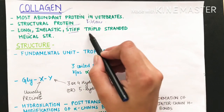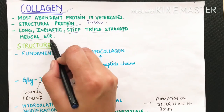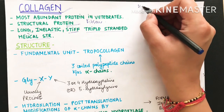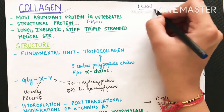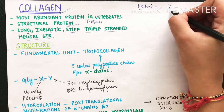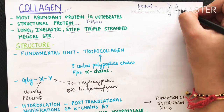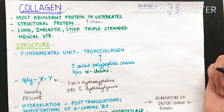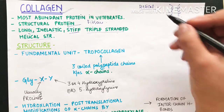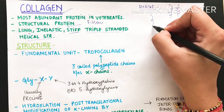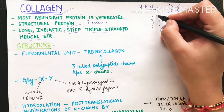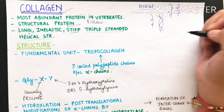Collagen is stiff and has a triple-stranded helical structure — meaning three helical chains are together forming one protein. The fundamental unit of collagen is tropocollagen, which is formed when three polypeptide alpha chains are coiled together.